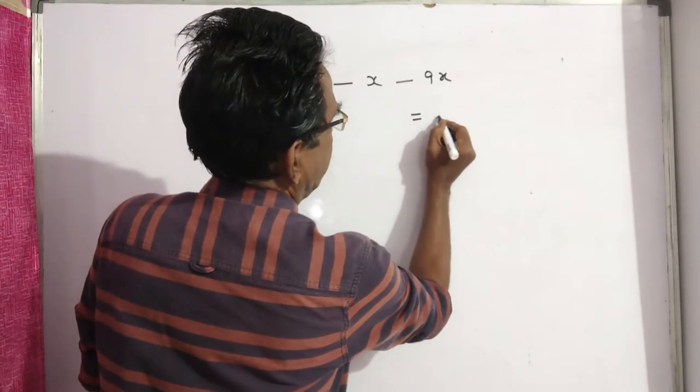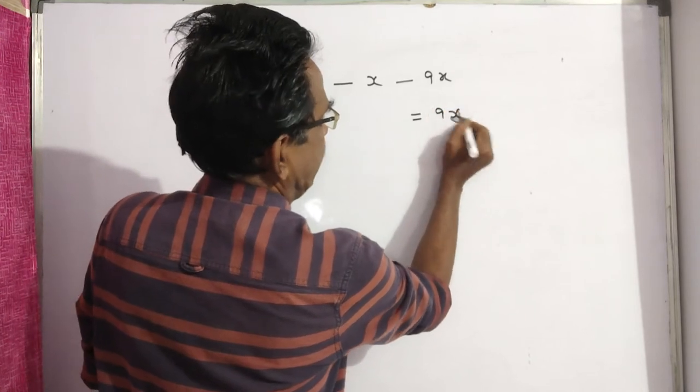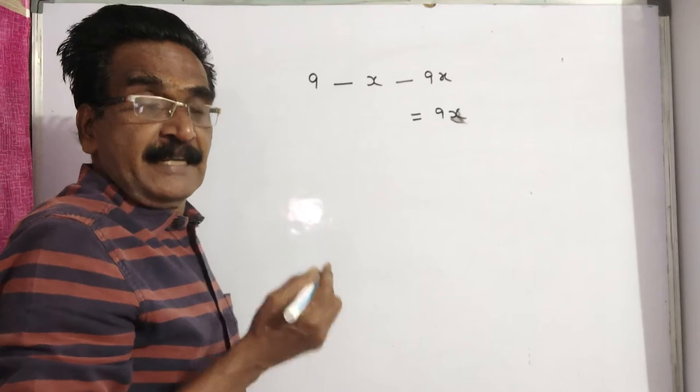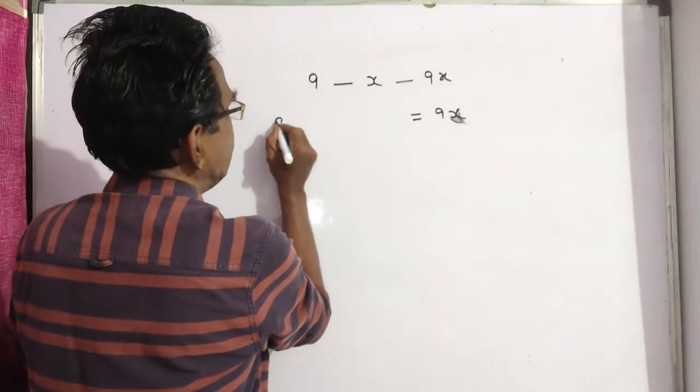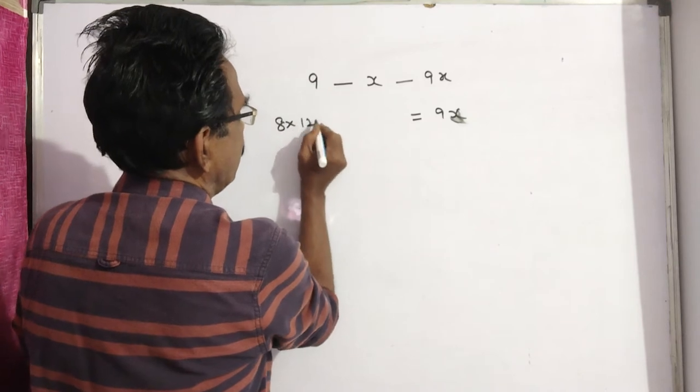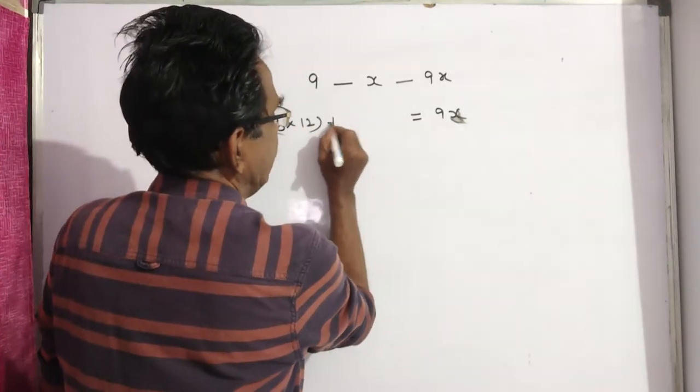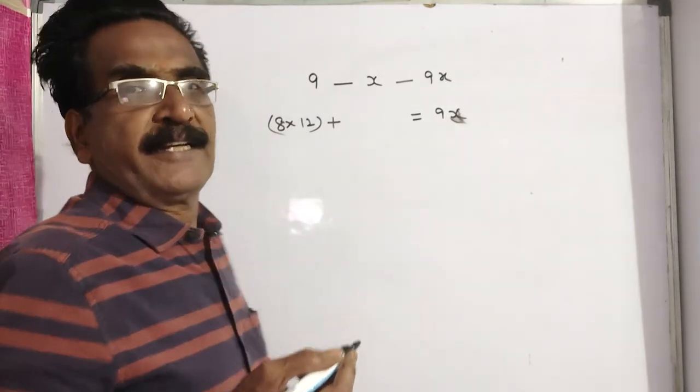This total expenditure 9x is equal to the total expenses of 8 members, 8 into 12, the total expense of 8 members plus the expenditure of the 9th person. What is the expenditure of the 9th person?